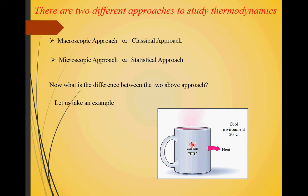So those are the two approaches. The classical or macroscopic approach is easy and involves a minimum amount of calculations, whereas the microscopic approach is a bit tedious and involves a lot of calculations. If you want to understand a system and talk about its properties as a bulk mass, you go for the macroscopic approach. If you are interested in finding out what is happening at the molecular level, the microscopic approach is used.